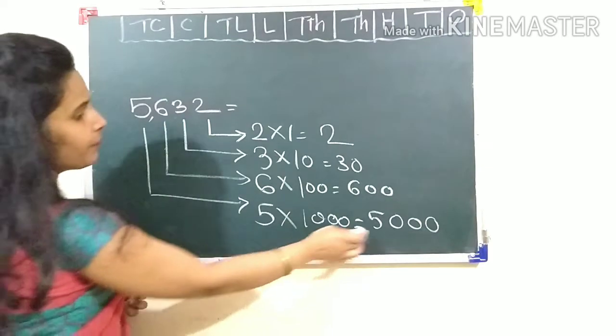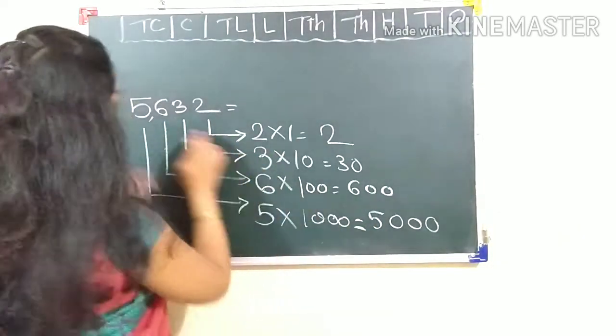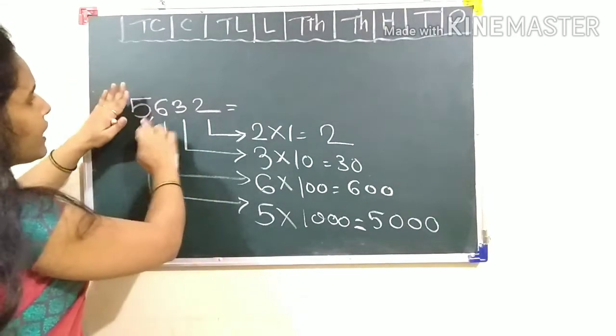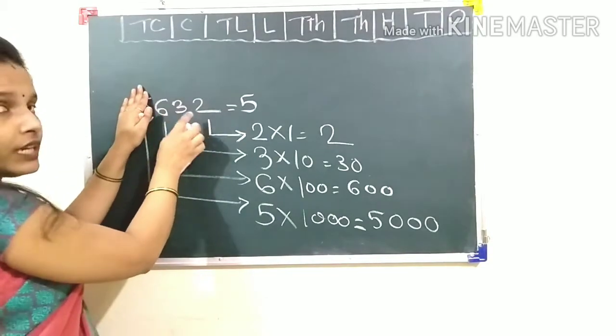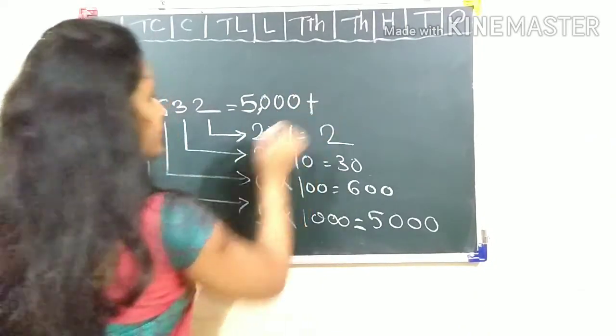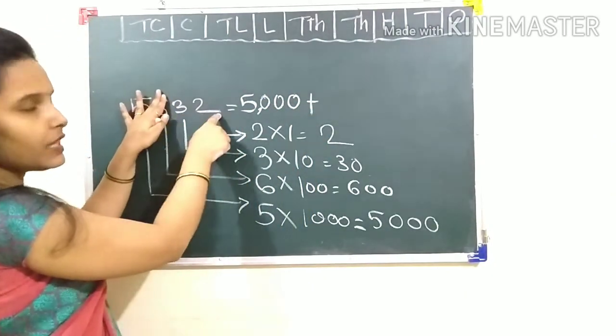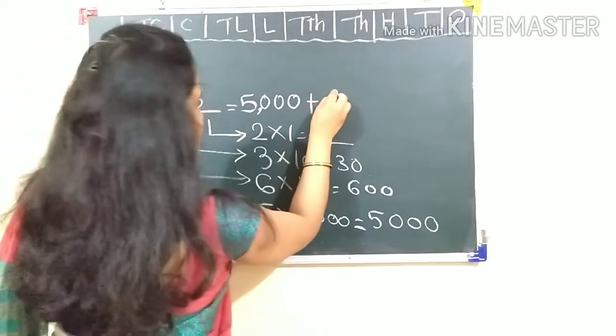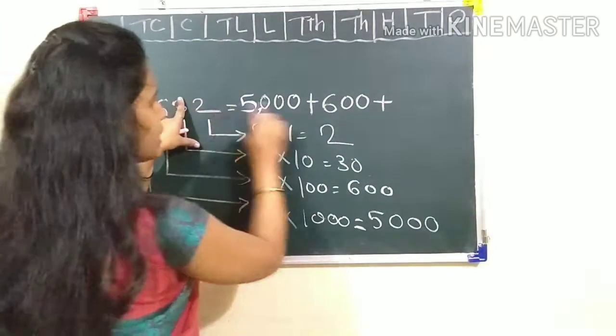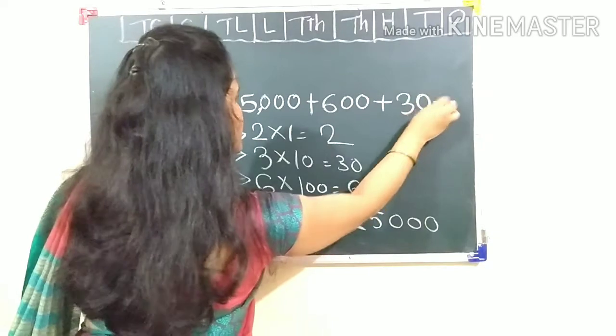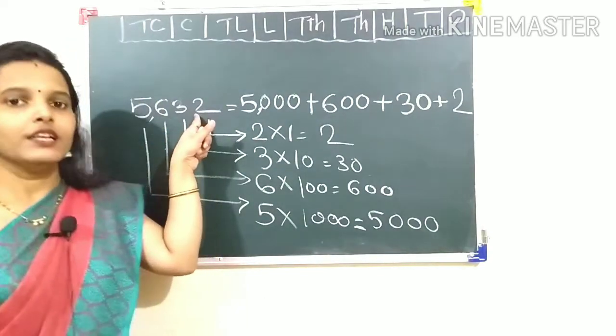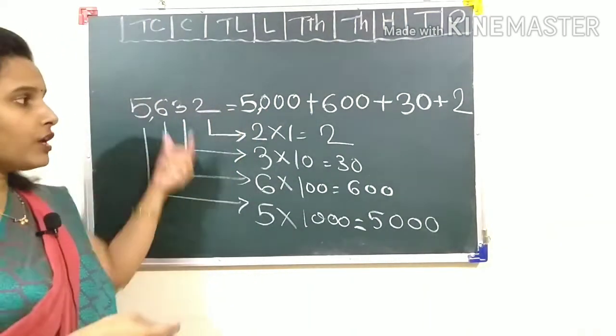Now direct, you can write all these numbers. This 5 has three digits after it, so write three zeros. Then plus, this 6 has two digits after it, so write two zeros. After this 3, one digit remains, so put one zero. And this 2 has no digit after it. You can see how easy it is. And we will take a lot of examples so you will understand more.